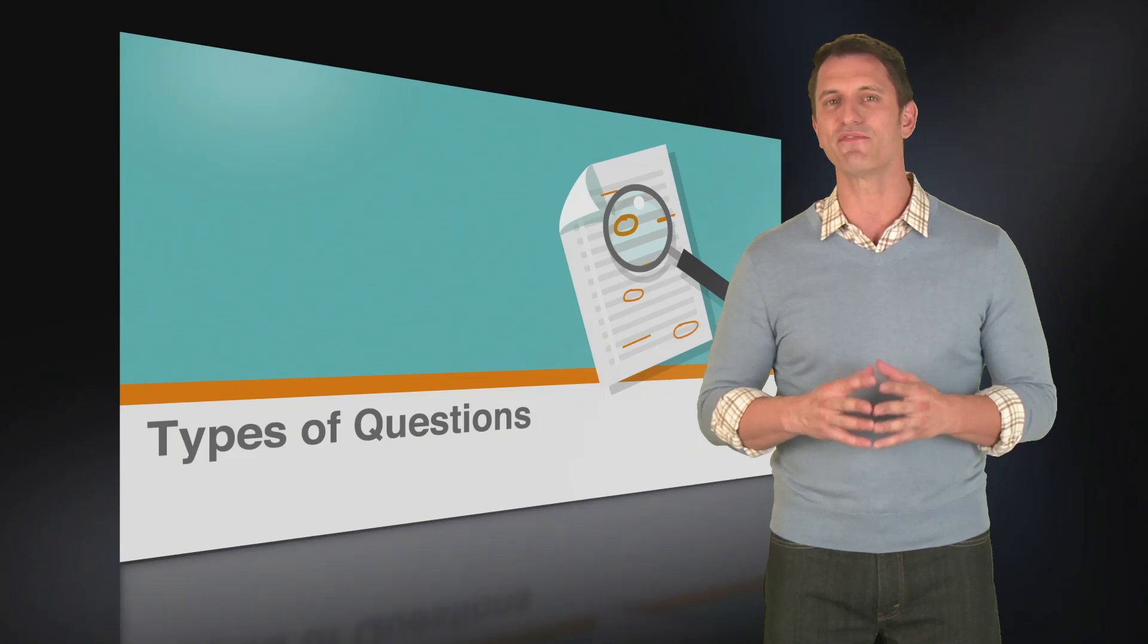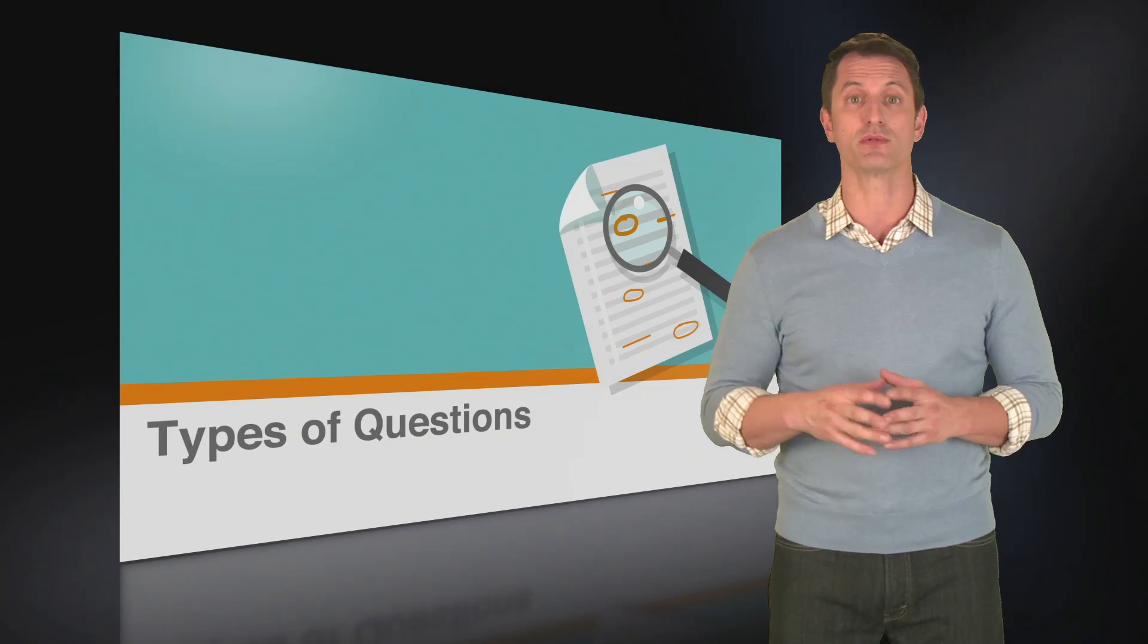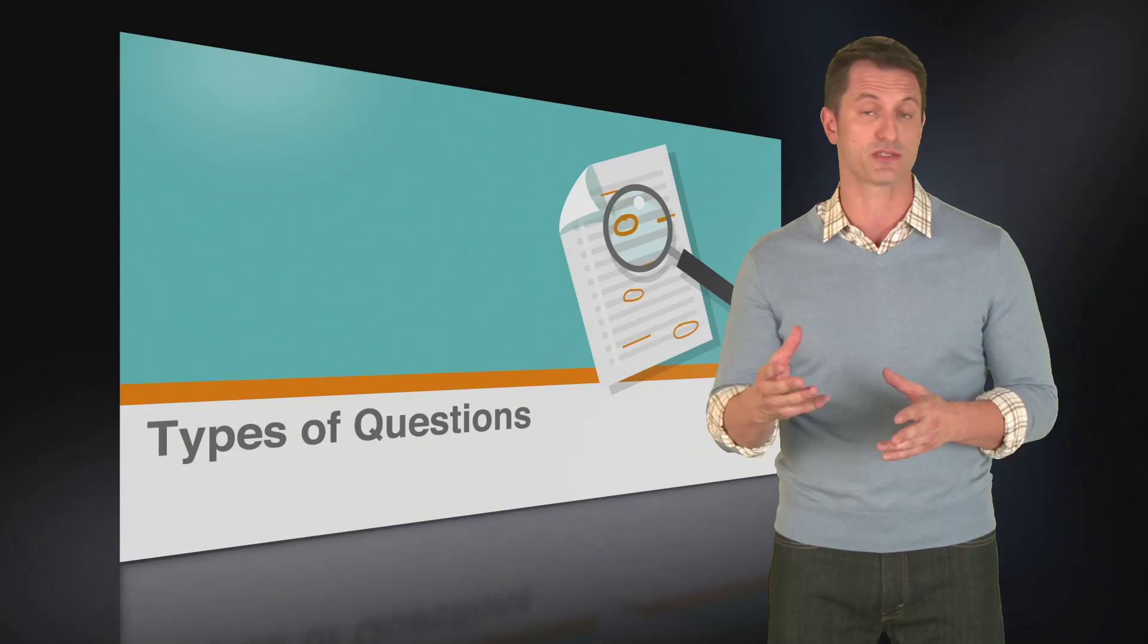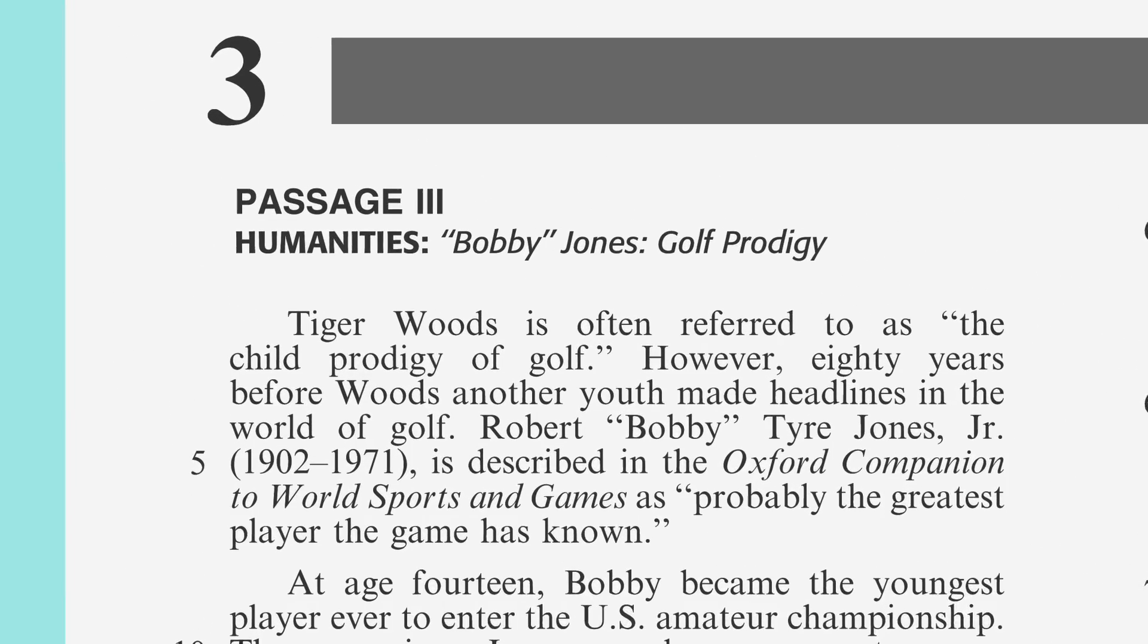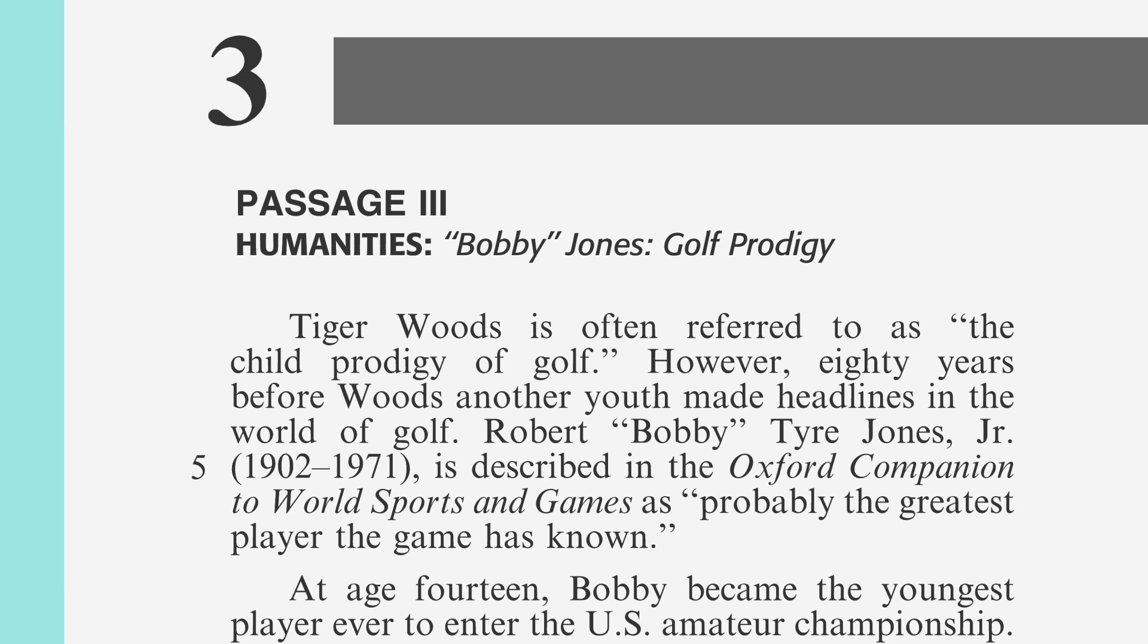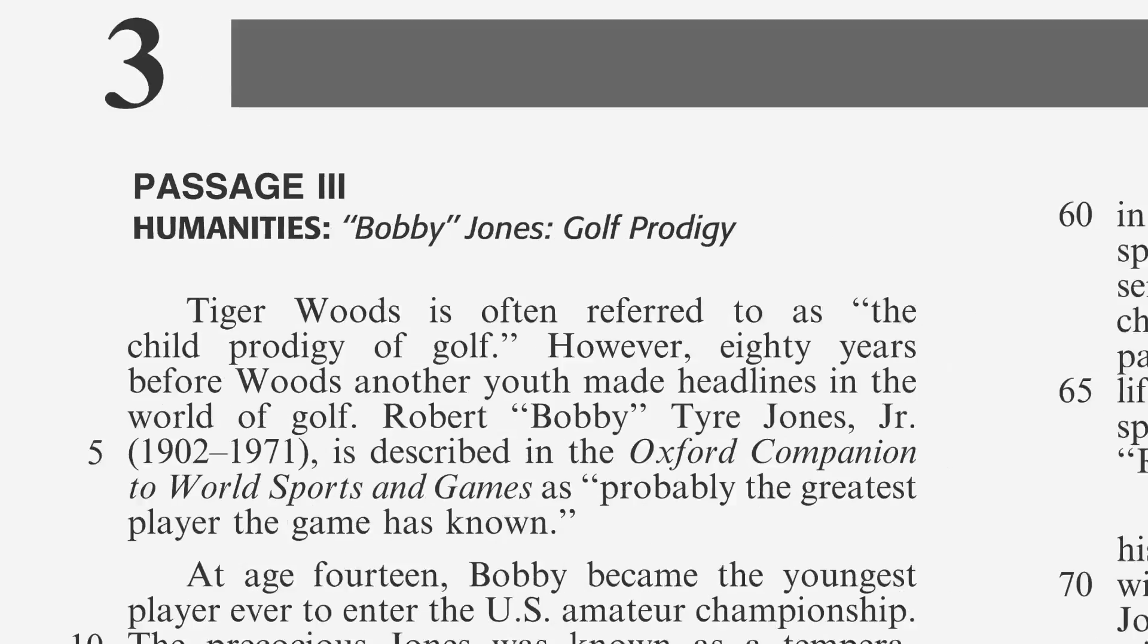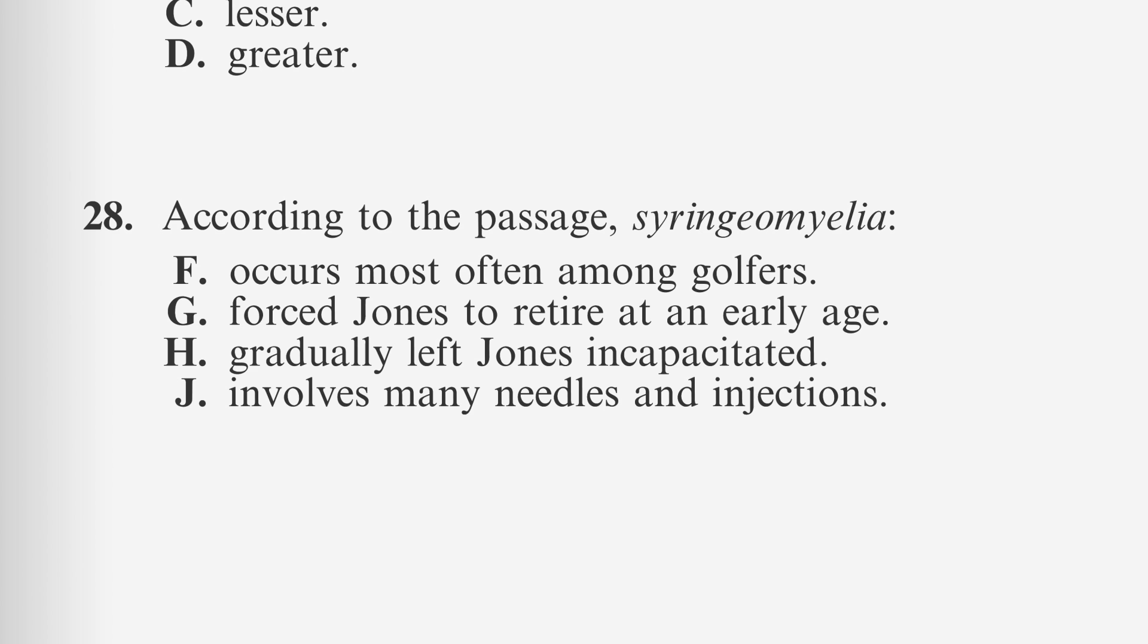Let's look at a specific detail question from a passage about Bobby Jones, the golf prodigy who was a predecessor to Tiger Woods. This passage details Bobby Jones' remarkable career, starting with his entry into the U.S. Amateur Championship at age 14 through his retirement. Let's look at question 28, which states: According to the passage, Syringomyelia: